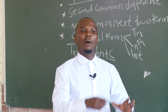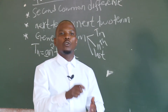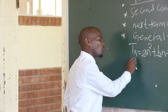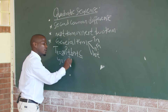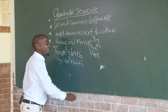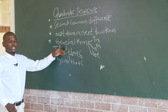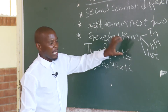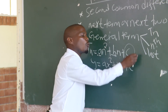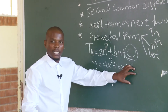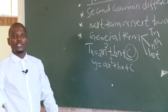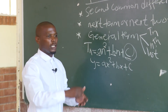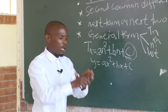Remember, these topics are related. This is the quadratic function. It is y = ax² + bx + c, which is the same as Tn = an² + bn + c. This is the constant. The same thing applies — it is equal to an² + bn + c.